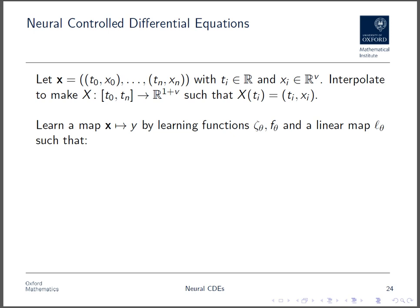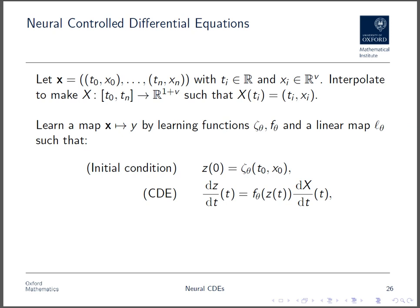Then we're going to learn a map from this time series X to some object y, by learning functions zeta, f, and l, such that we have this initial condition depending on the first element of the time series, and z is now modified continuously according to this controlled differential equation. The right-hand side is a matrix vector product between f and dx/dt. Changes in X will thus provoke changes in z, as changes in X change the local dynamics of the system.